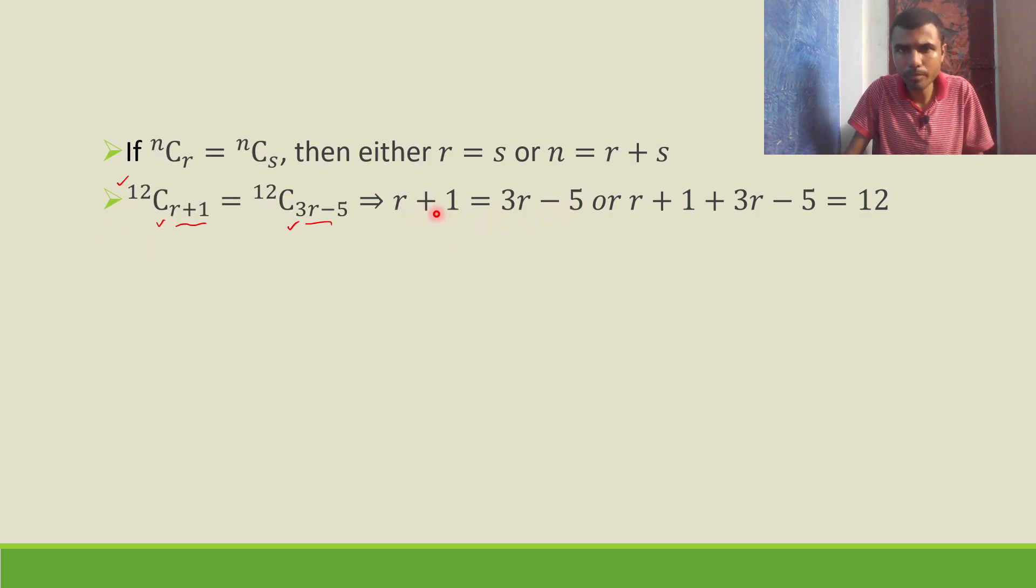Let us start simplifying. Send 3r here and 1 here, so r - 3r = -5 - 1, or r + 3r = 4r, and 1 - 5 = -4, so 4r - 4 = 12.